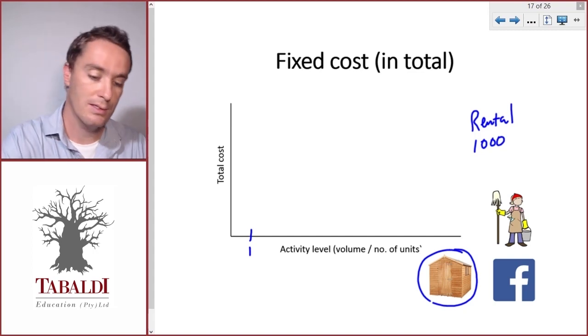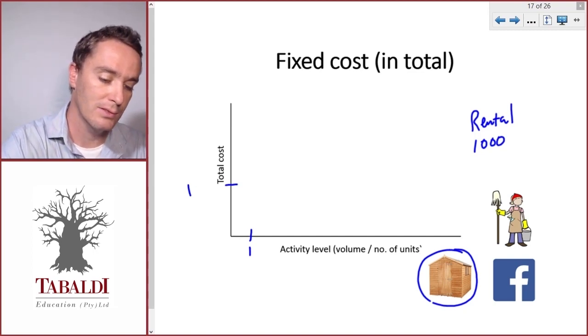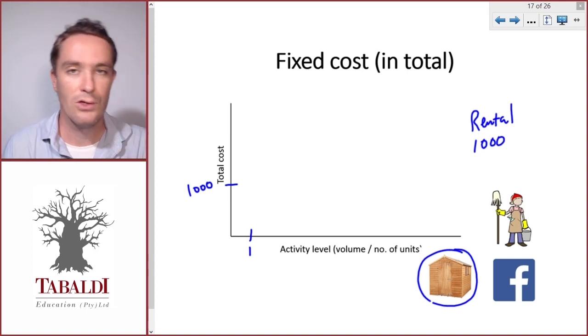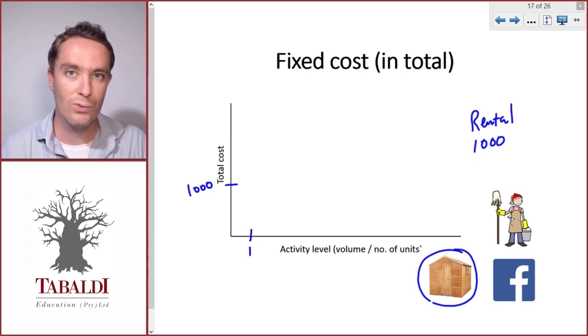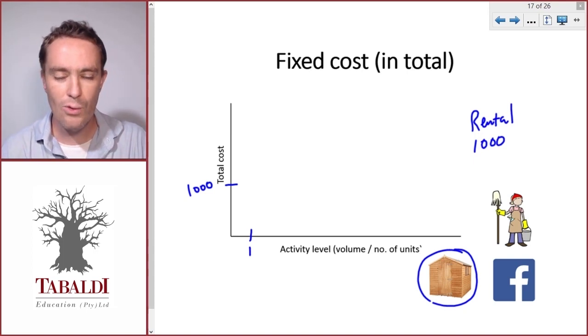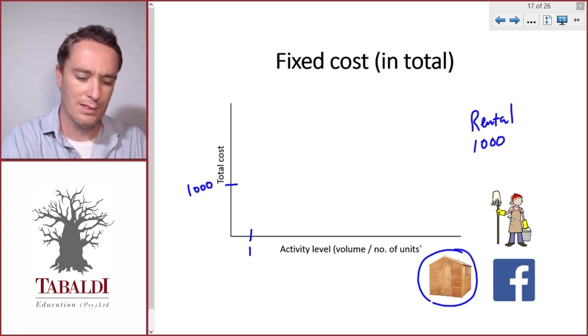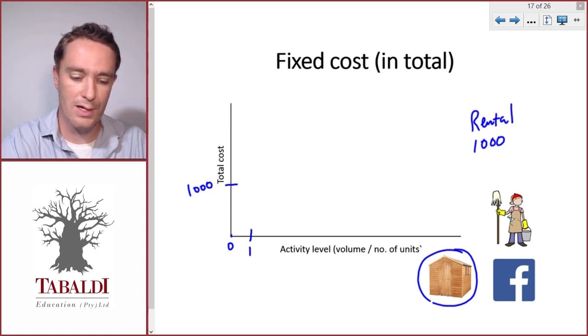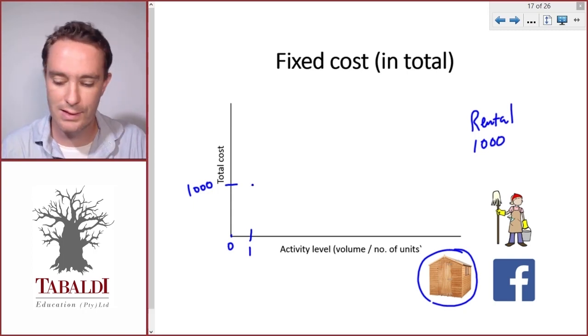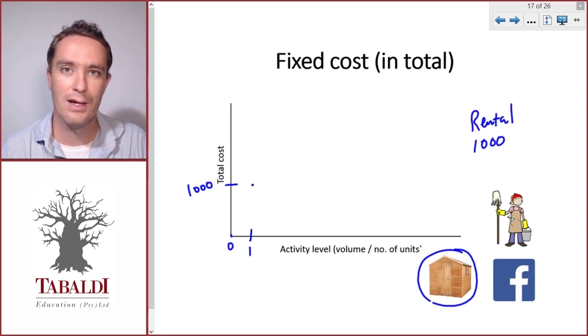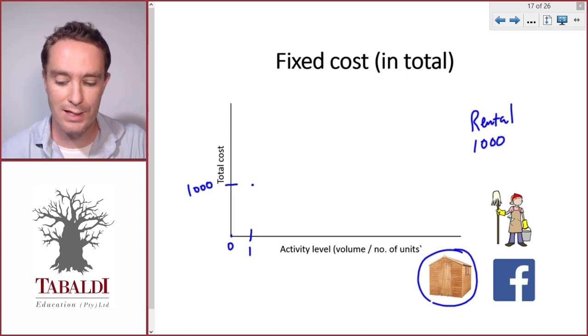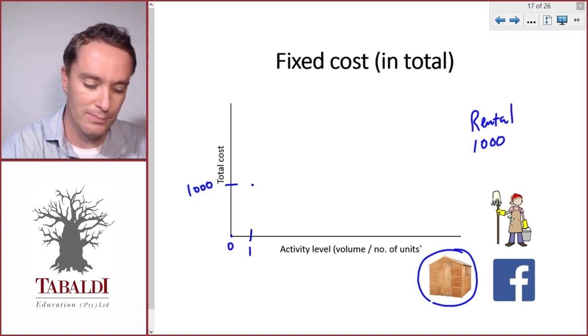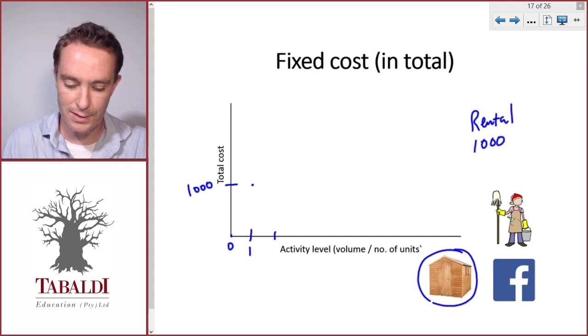Now if we make one table, the total rental for the month will be a thousand, so we have to pay based on the agreement with the landlord. Now what happens if we don't make any tables? So zero tables, do we still have to pay the rental? Of course, the rental agreement is completely separate from the number of units or our production schedule. They don't care what we do inside as long as we don't burn the place down.